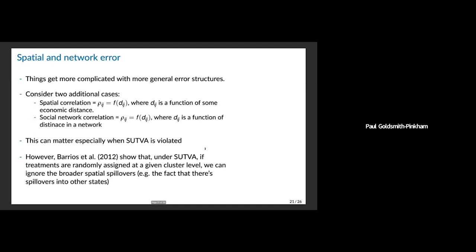Now let's talk about spatial and network errors. Clustering has this really beautiful block structure, but things get a lot more complicated once you allow for the idea of there being correlation that differs for each person as a function of their distance from other people. Spatial correlation is typically defined as there's some correlation sigma_{ij} which is a function of the distance between any two units — think about people living on a surface, where further apart means less correlated. Social network correlation is done the same way where distance is a path length distance on a network.